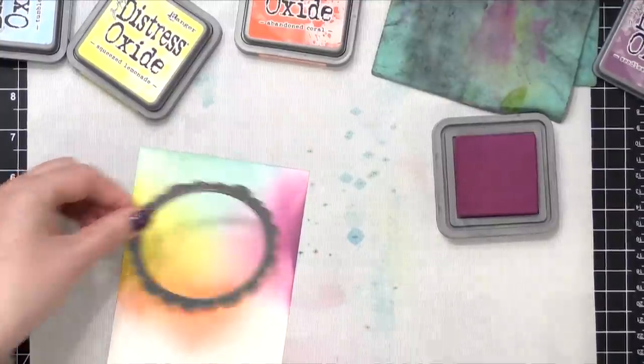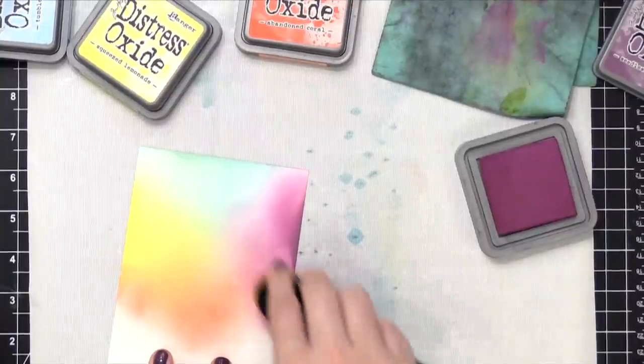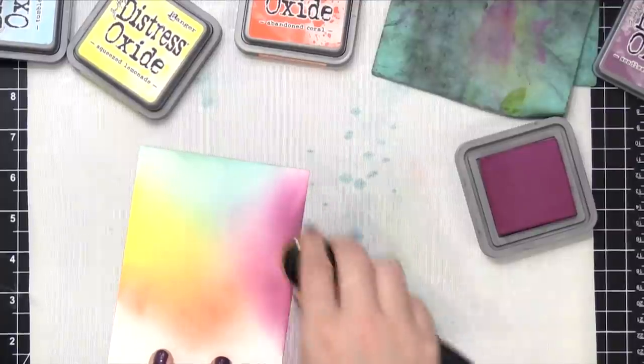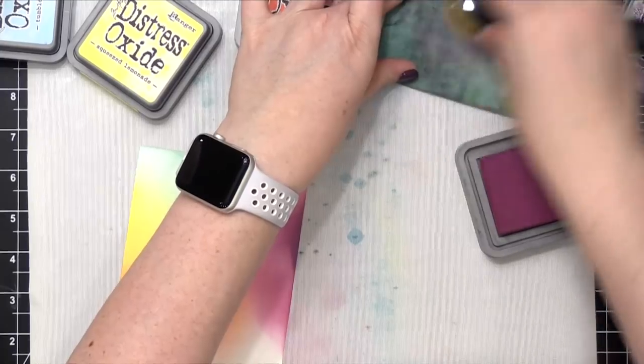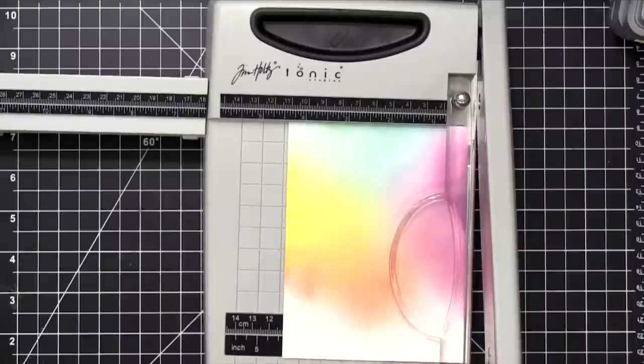This is the die right here. I'm gonna use it to create a shaker card. So that die I'm using is actually a new die from Paper Smooches. Paper Smooches—Kim, the owner and the designer—she took a little break, and they now have a new release. I'm super excited. And this is just one of the new products that they're releasing.